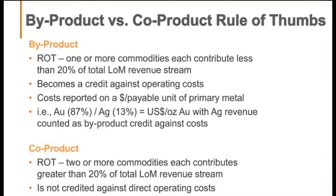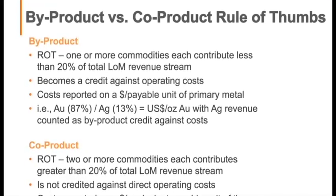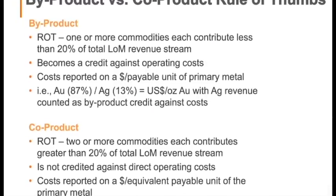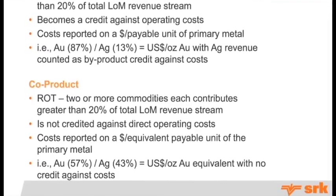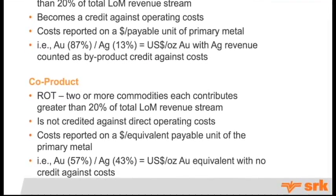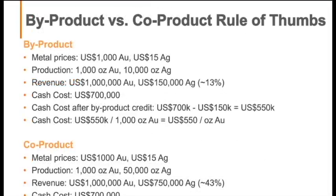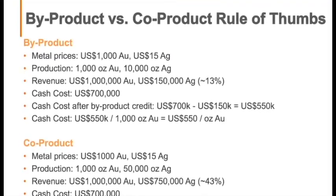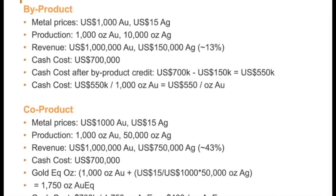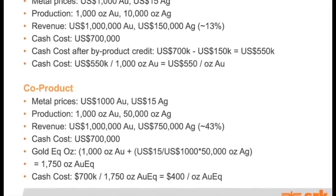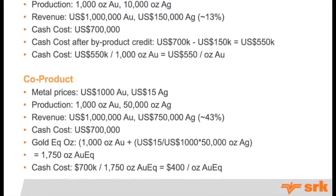So the by-product versus co-product rule: by-product applies if one or more of the commodities contributes less than 20% — that's a rule of thumb we use. Co-product applies when two or more commodities each contribute 20% or more of the revenue stream. The by-product is credited against operating costs, whereas co-product is not. In this example, we've got 1,000 ounces of gold and 10,000 silver. The silver is reporting 13% of the revenue, so if your cash costs are $700,000, you subtract the silver revenue to get $550 divided by the gold ounces — so $550 per ounce.